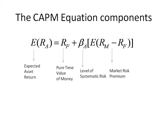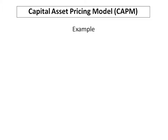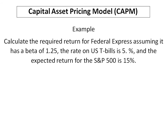Now, we are going to assume a few numbers and calculate the asset's return, and then depict it on a graph. Our data relates to a share of stock issued by Federal Express, which has a beta of 1.25. The rate of return fetched by U.S. Treasury bills is equal to 5%, and that will serve as a proxy for the risk free rate. We have also been given the expected return on the S&P 500, which is 15% — the S&P 500 is a market index, and therefore serves as a proxy for market return.